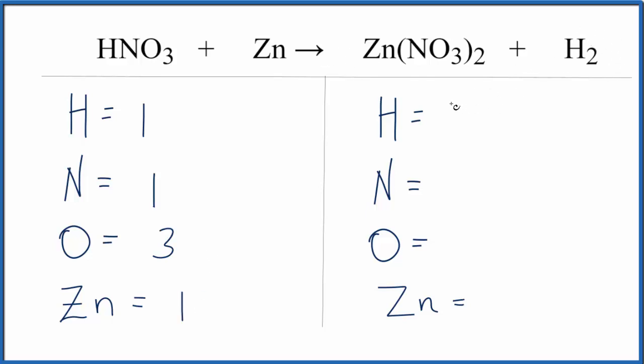On the product side, we have the two hydrogens here, and then this two applies to everything in parentheses. So we have nitrogens, we have the two times the one, two of those. Oxygens, two times three, that gives us six. And then out here, outside of the parentheses, we have one zinc.